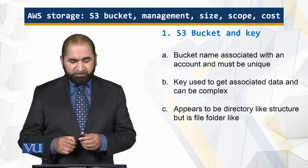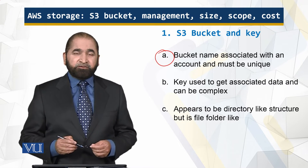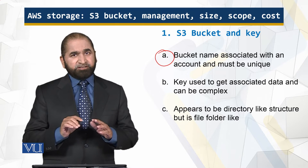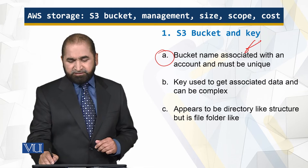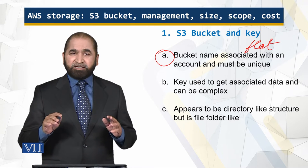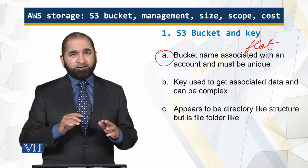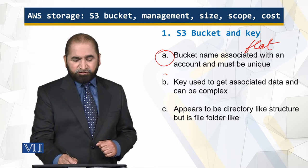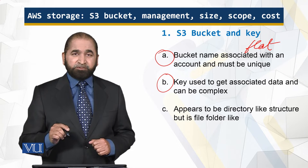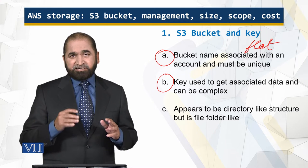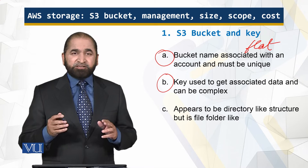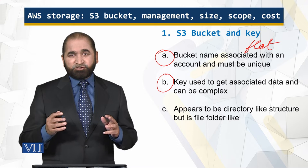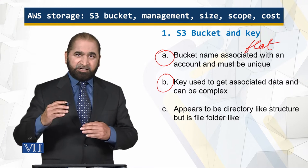There is a bucket name associated with S3, and that bucket name has to be unique — it has to be unique across all the regions where the S3 servers are available. Although it is a flat structure, the data associated with S3 can be simple or complex, and it has a certain methodology of addressing. It appears to have a directory-like structure, but the actual S3 storage structure may not be visible to you.